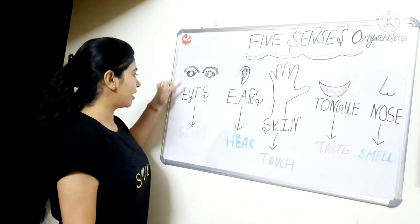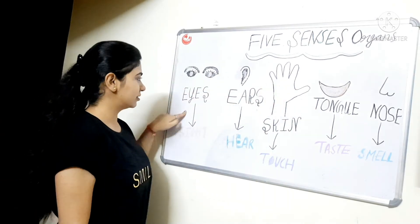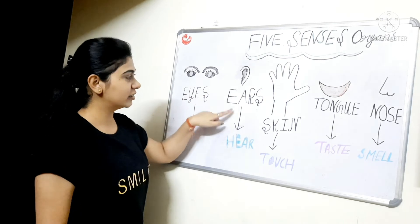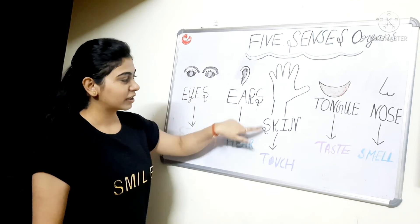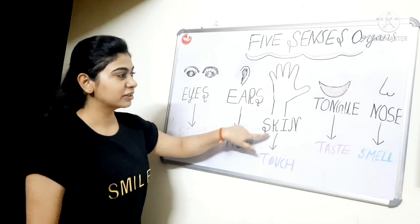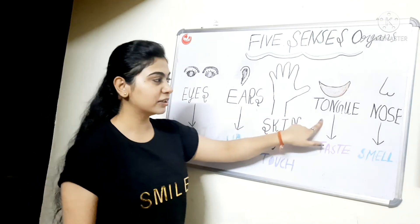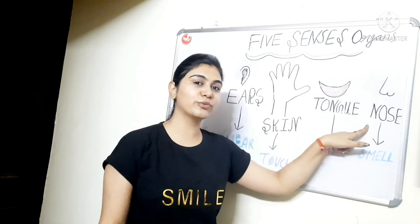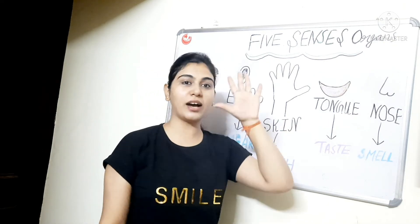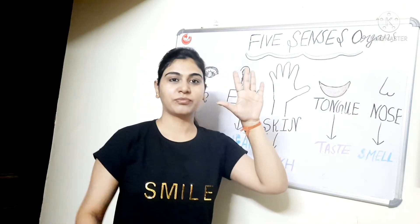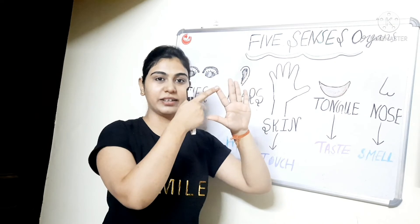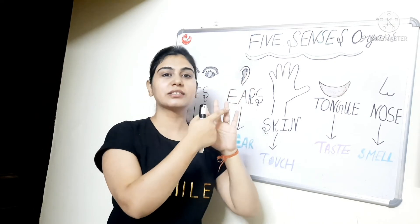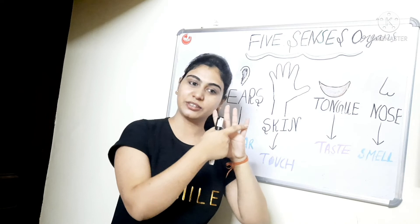First is eyes. Second, ears. Skin, tongue and nose. How many sense organs do we have? 5. Ear, eyes, nose, tongue and skin.